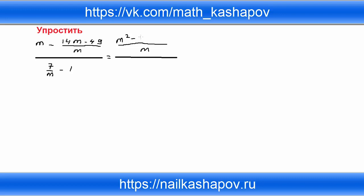Мы получаем минус 14m плюс 49. Рассмотрим знаменатель — общий знаменатель тоже будет m. Тогда мы получаем 7 минус m, потому что единицу нужно домножить на m. Всё это равно: если внимательно посмотреть, m квадрат минус 14m плюс 49 — это похоже на формулу сокращённого умножения.